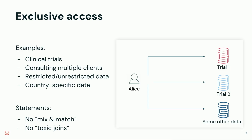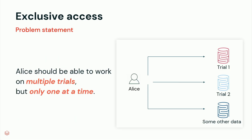Or in the banking industry, there may be account data from bank customers for various countries, and you shouldn't be able to join them. So this is the kind of feedback we got for isolating different datasets from each other, along with their permissions. It boiled down to: like Alice, a user should be able to work on multiple trials, but only one at a time.